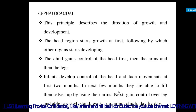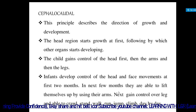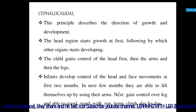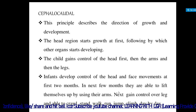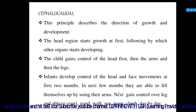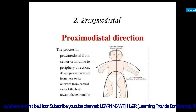Infants develop control of the head and face movements first — around two months. In the next few months they are able to lift themselves up using their arms. Then they gain control over the legs and are able to crawl, stand, walk, run, jump, and climb, and day by day they no longer need to stay in their mother's lap.